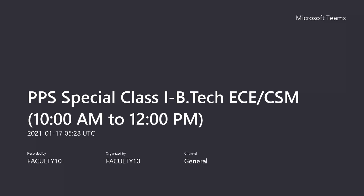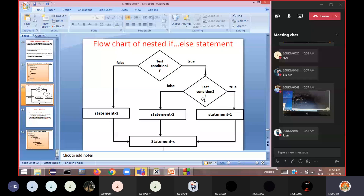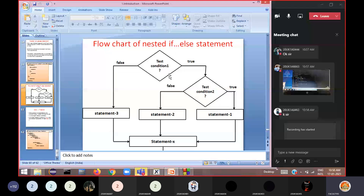A nested if-else statement is used when more than two conditions need to be tested. Nesting means writing one if statement inside another if statement, or writing one if statement inside an else statement. Anywhere you can write an if, you can nest another if. The best example for a nested if-else statement is finding the greatest of three numbers.